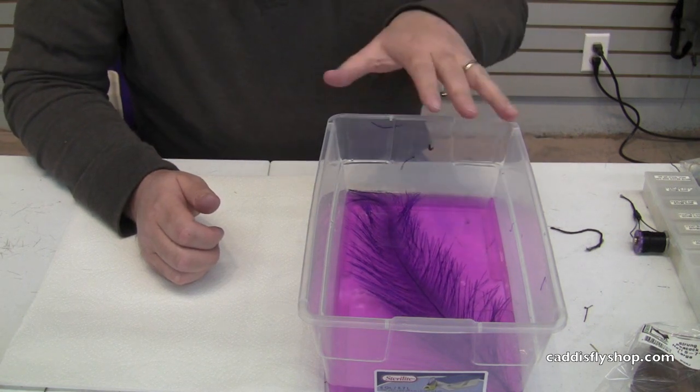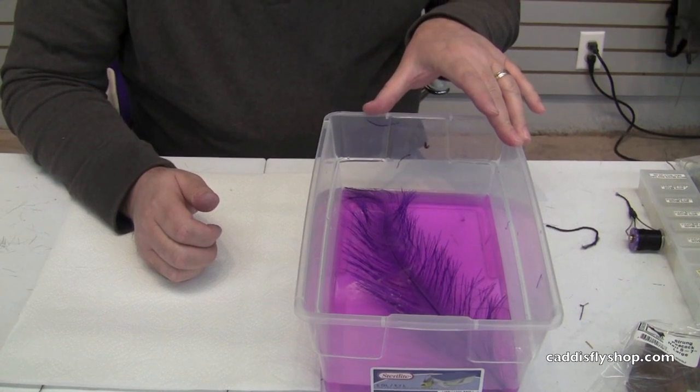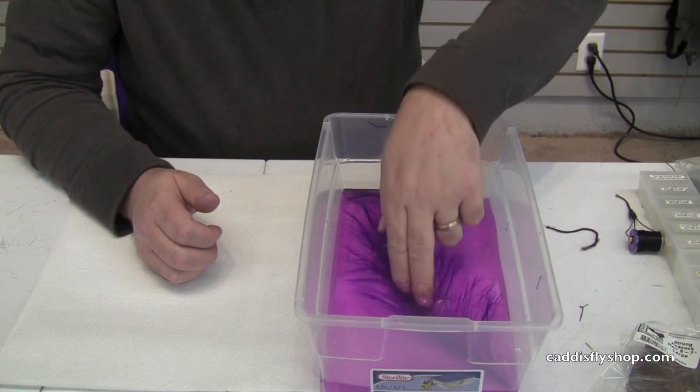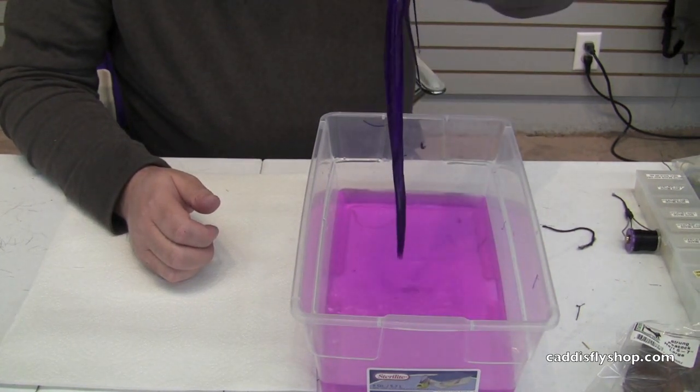So we've got a feather here, a Rhea feather that's been soaking in warm water for about 40 minutes. That's optimum. Make sure that the stem and everything gets down. You see it bled out a little bit of color but that's okay.